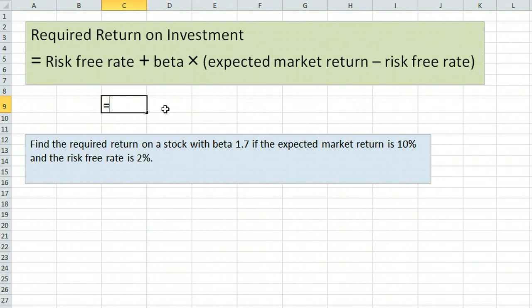it says it is equal to the risk-free rate, 2, plus the beta, 1.7, times, open parentheses, the expected market return, 10, minus the risk-free rate, 2. We're going to close parentheses.